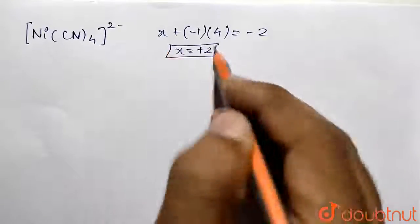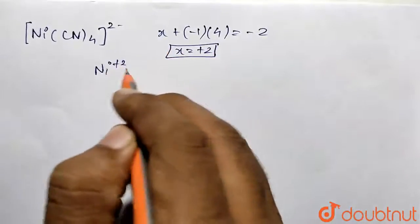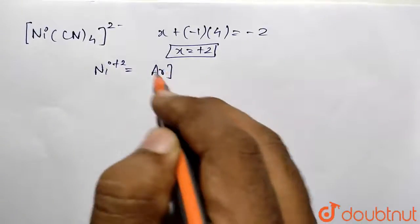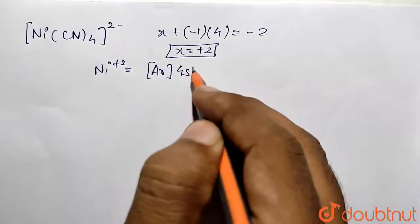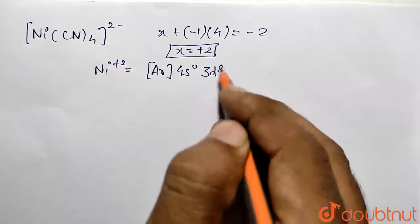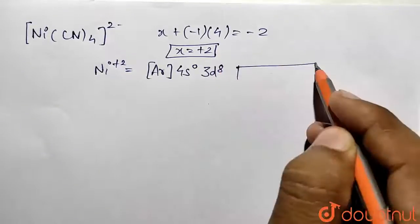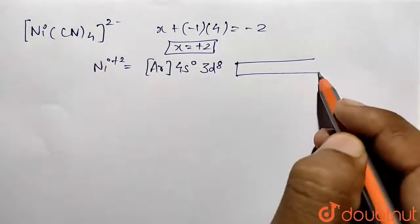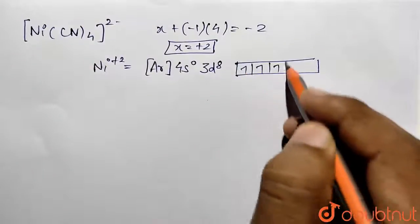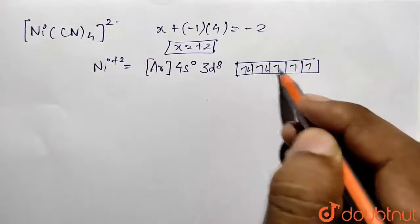CN is a negative ligand, so -1 multiplied by 4, and this is overall -2 charge. So value comes out to be +2, which indicates that nickel is present in second ionization state. Configuration is 4s⁰ 3d⁸. This is the representation of the configuration for us.